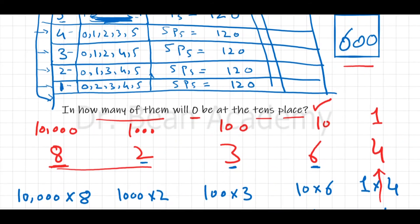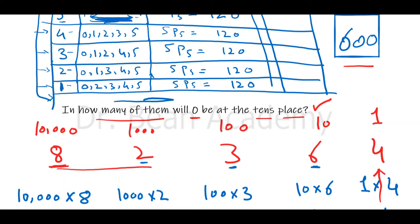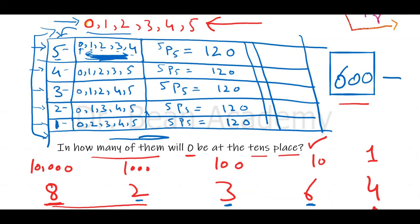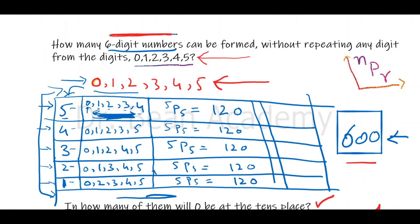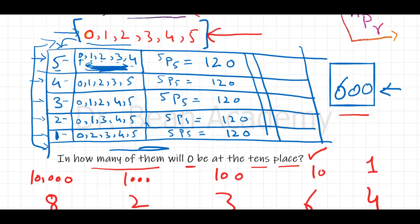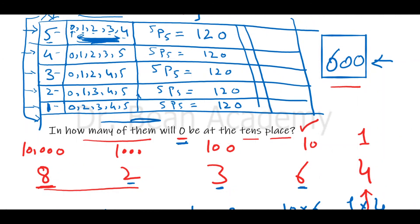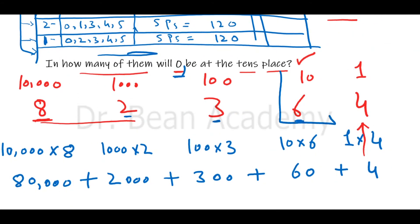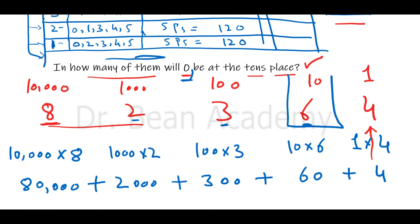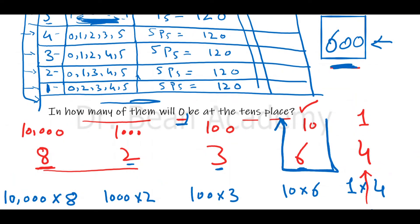In this part of the question it asks: out of the 600 six-digit numbers formed from the given list, in how many of them will zero be at the tens place? The tens place is the second position from the right. So we want to know how many of those 600 numbers have zero in that second-from-right position.